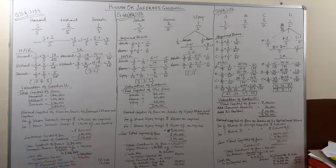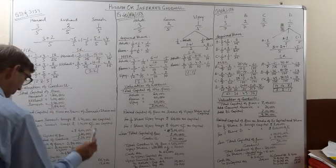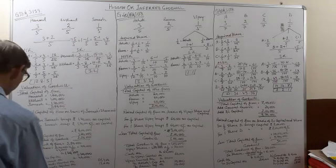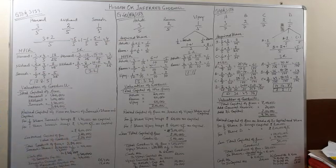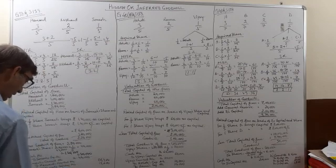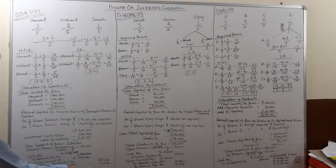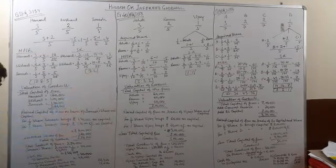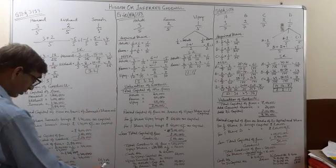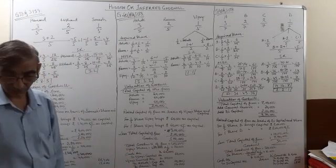Rs 1,20,000 entry is passed for the amount Somesh brings as capital. For goodwill of Rs 44,000, since nothing is mentioned about cash payment, Somesh's current account is debited Rs 44,000 and this amount is distributed among the sacrificing partners in the sacrificing ratio 3:2. Therefore, Hemant's capital account is credited Rs 26,400 and Nishant's capital account is credited Rs 17,600.